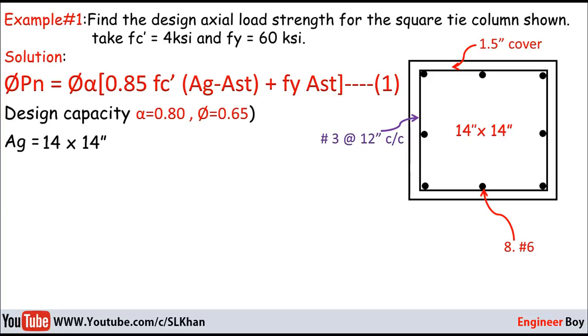Now what should be Ast? Ast is the area of steel. Remember the steel is round, so its cross-sectional area may be πD²/4.